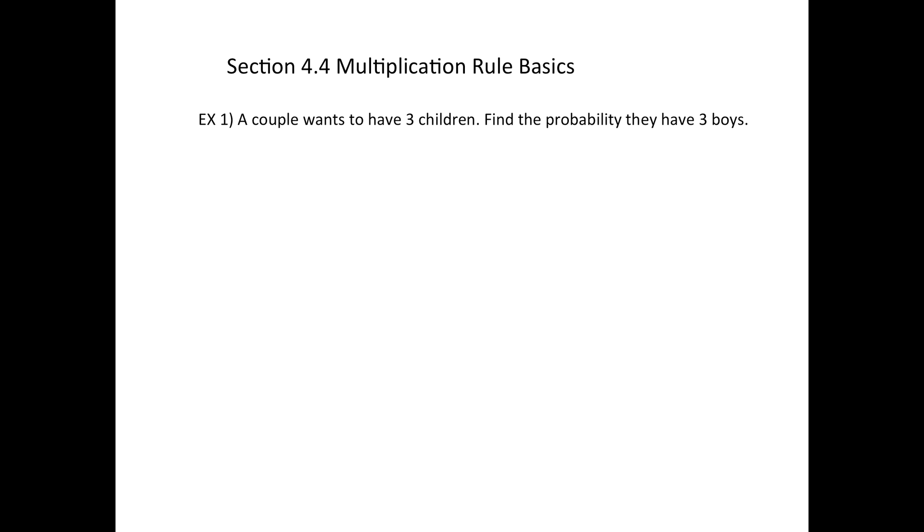But first here's an example. Suppose this couple wants to have three children. What's the probability that they have all three boys? So here's one way to do it. You write out all of the gender combinations. So here is the possibility where they have three boys. They could have two boys and a girl.